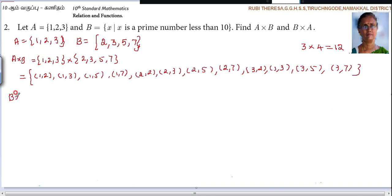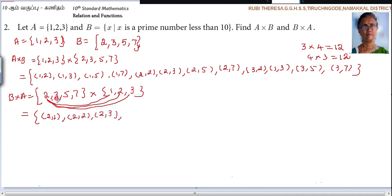Next one is B cross A. So same thing. 4 times 3 is 12, so 12 pairs should be there. So first one, B cross A means how you have to write? You have to write the B set first. Then A set: 1, 2, 3. So first 2 is paired with 1, 2, 3. So (2,1), (2,2), (2,3).